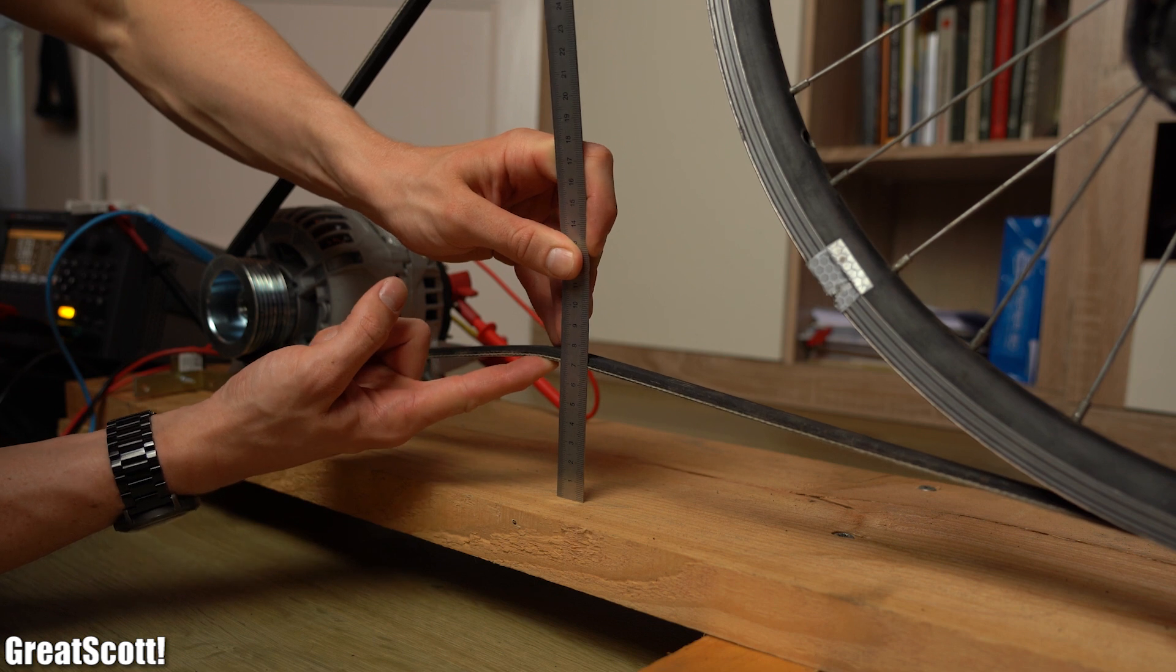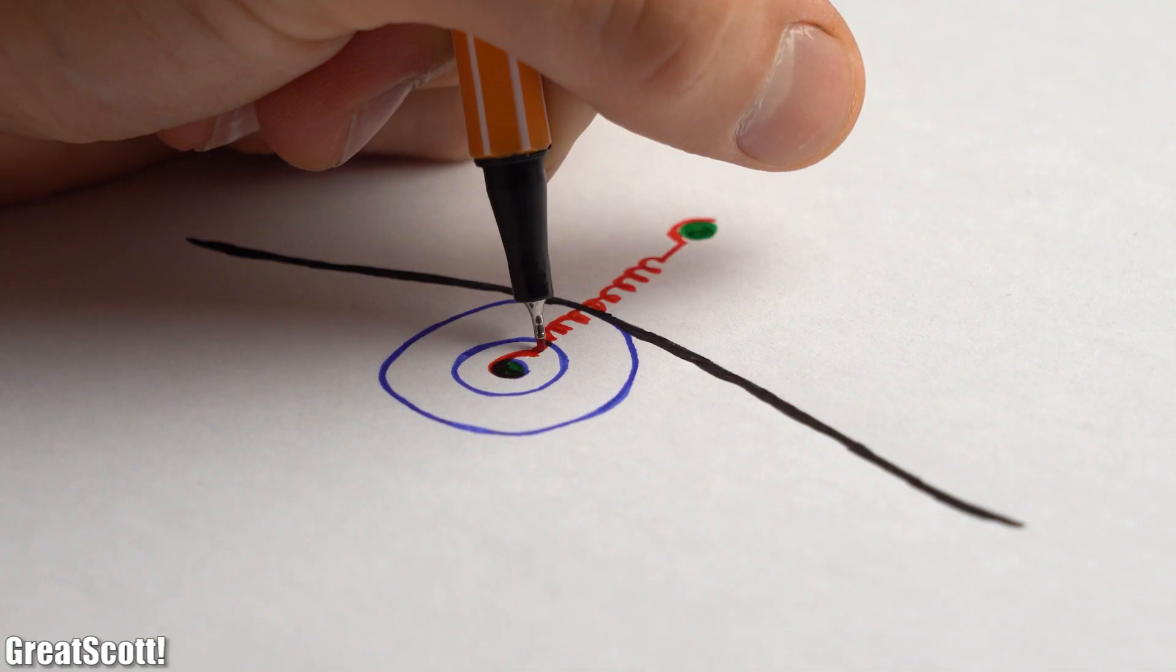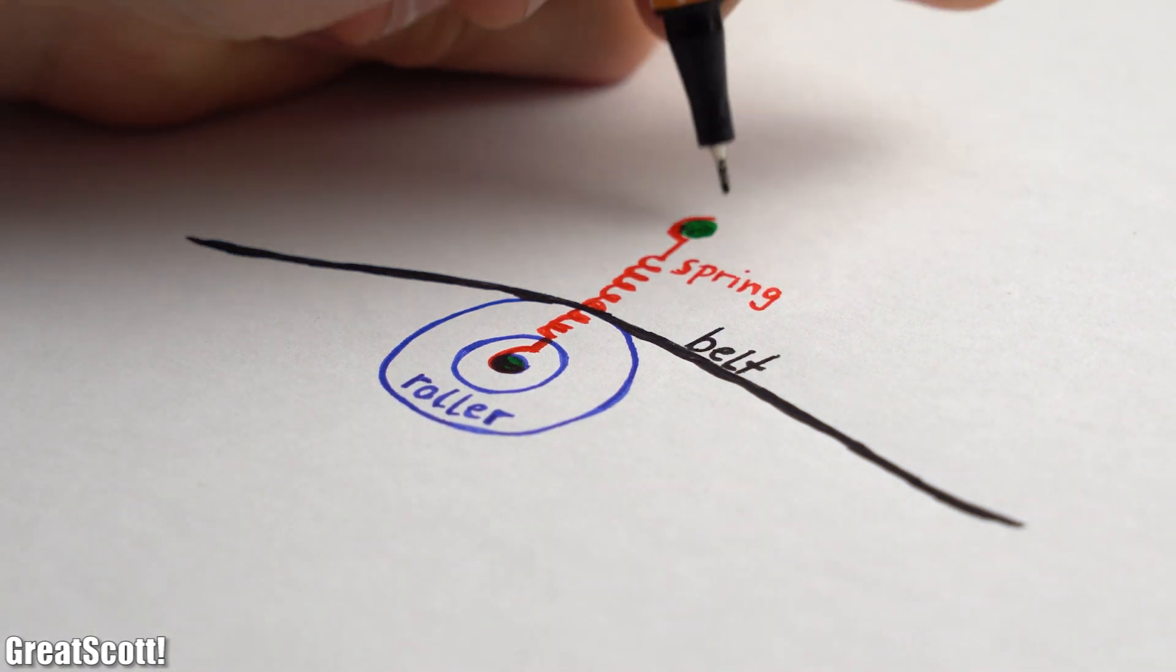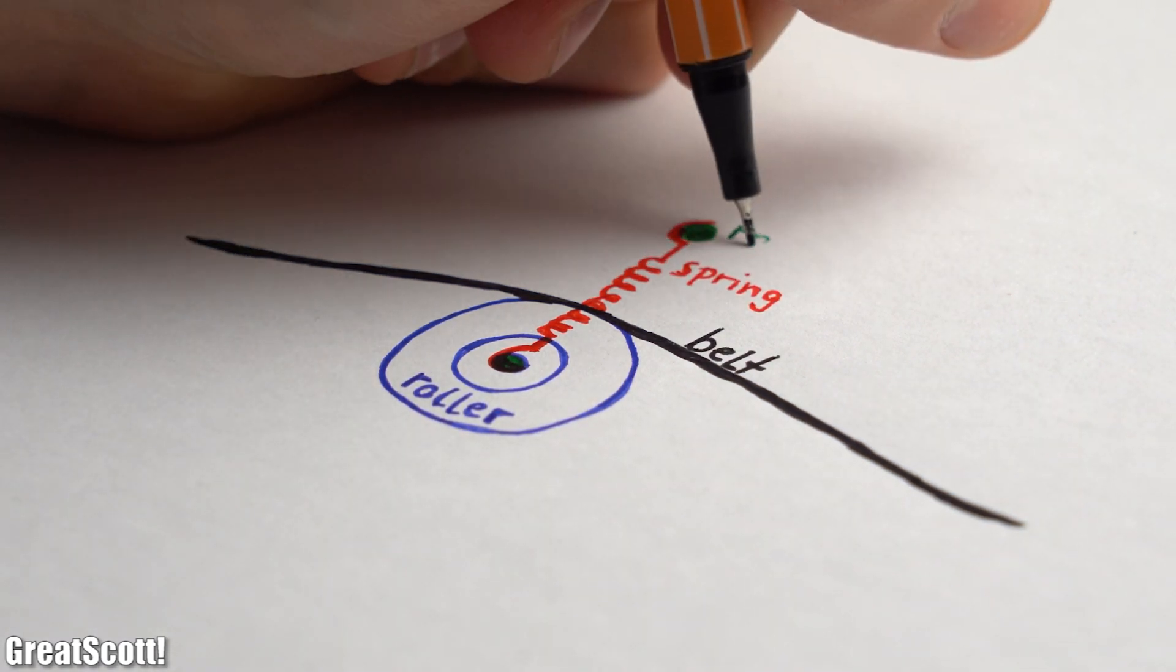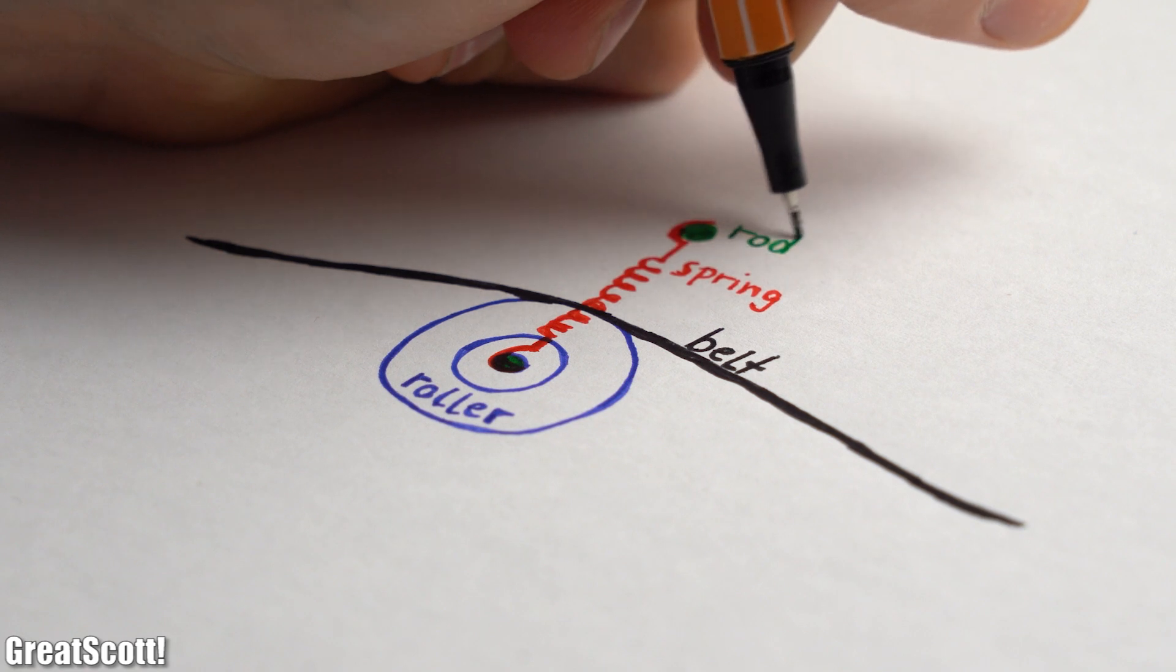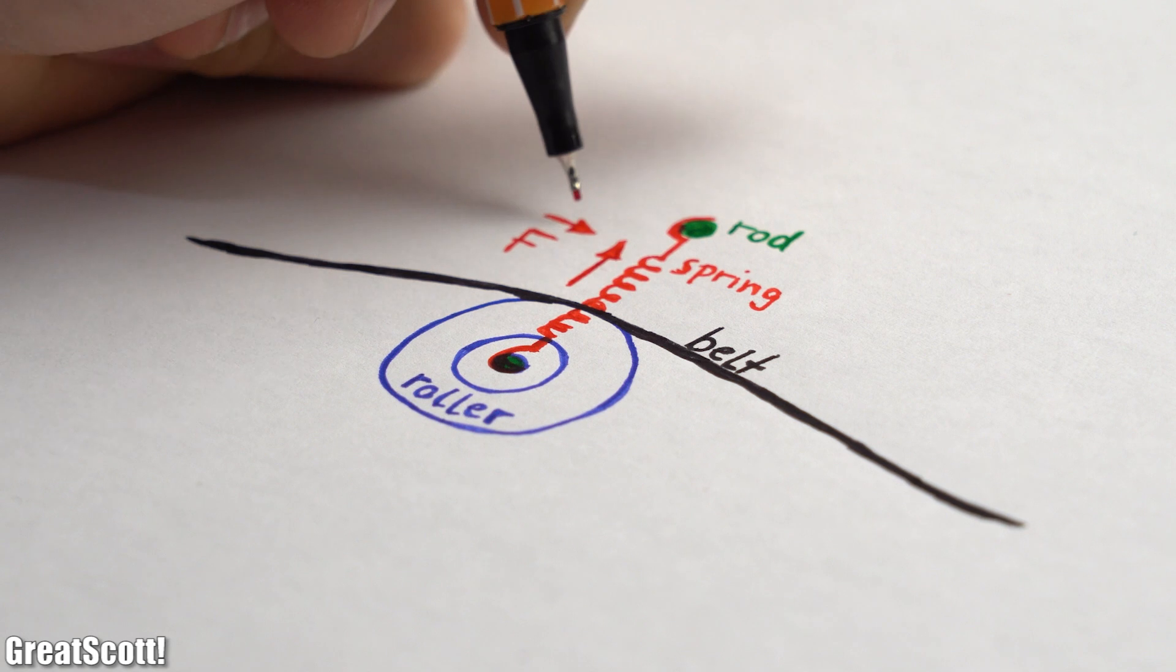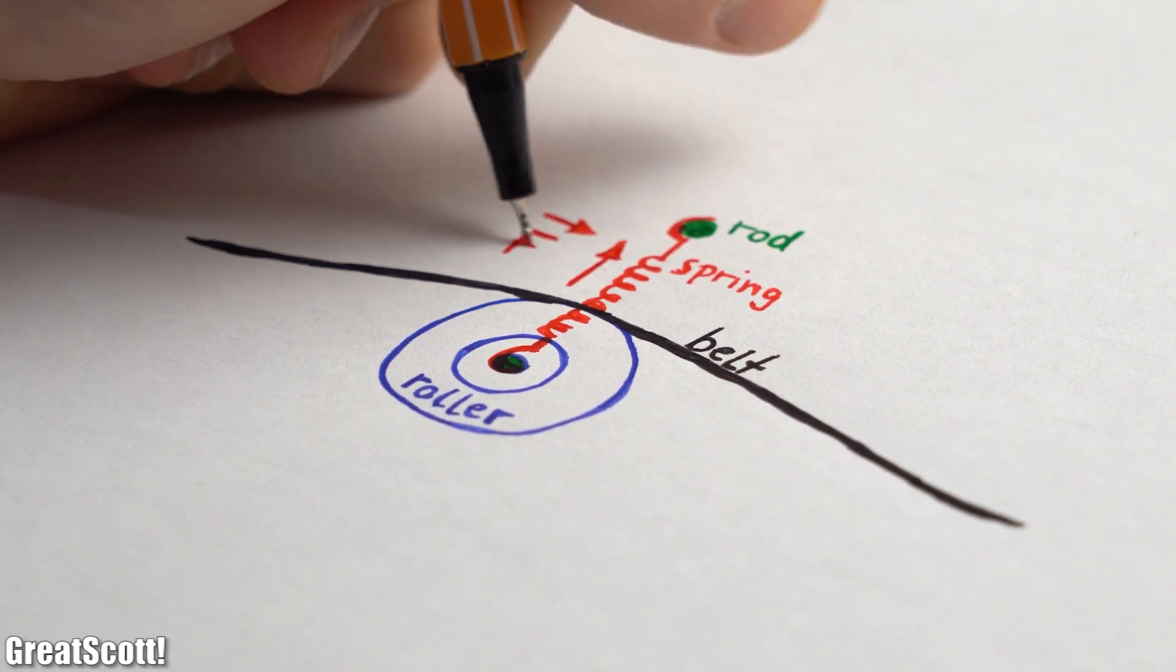To do that I firstly took a couple of measurements and then came up with this simple sketch. My idea is that the belt will move over a kind of roller which is suspended in the air through springs, and these springs will obviously apply a force to the belt that will keep it under tension.